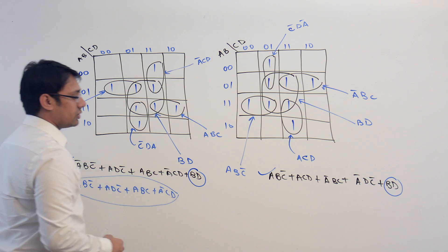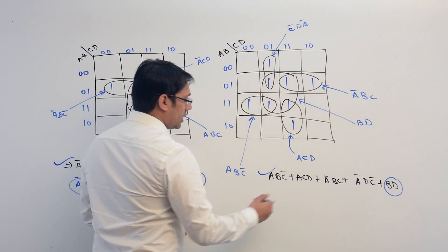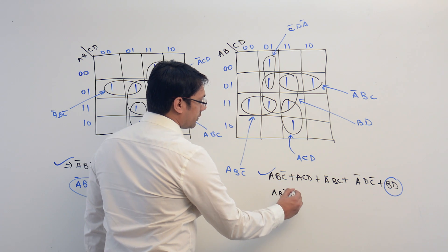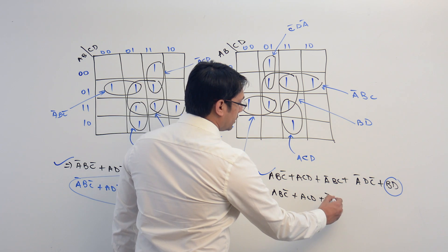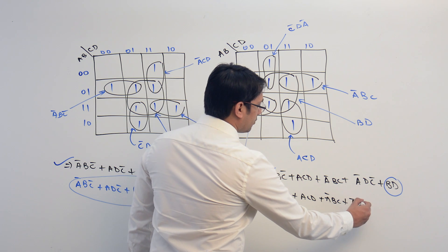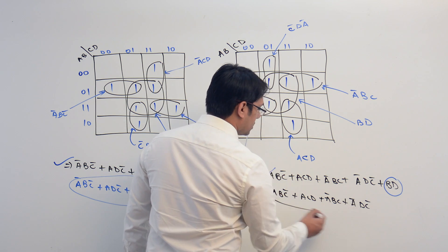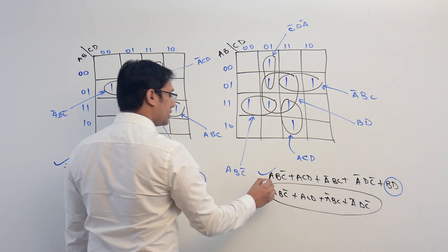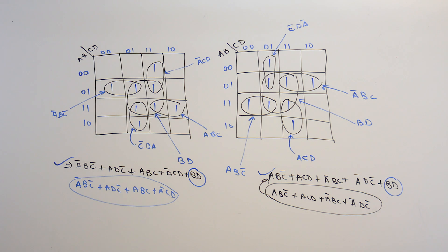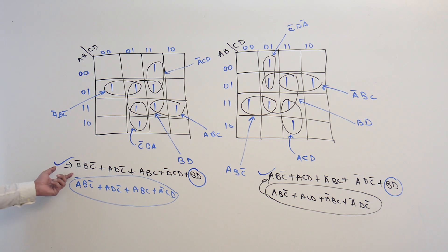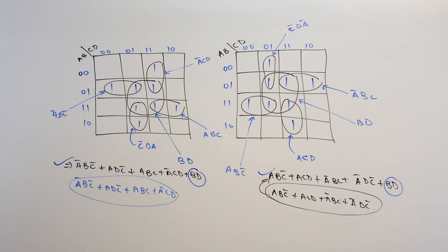Without BD also, we can do this. If we write A, B, C complement plus A, C, D plus A complement, B, C plus A complement, D, C complement, this smaller equation is representing the same thing. You can take this equation and minimize it. Let me take one of the equations and try to eliminate BD from this.